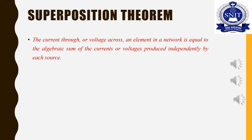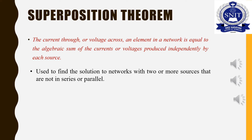Basically, the circuit network can be closed or open. The circuit elements include resistor, capacitor, and inductor. The current through any element or voltage in a network will be equal to that produced by each independent source. This theorem can be used to find the solution to networks with two or more sources that are not in series or parallel.